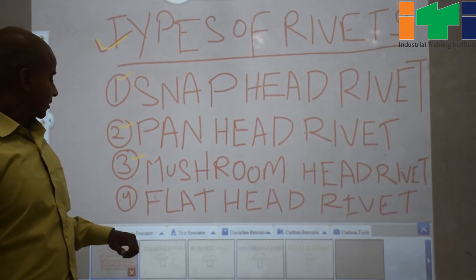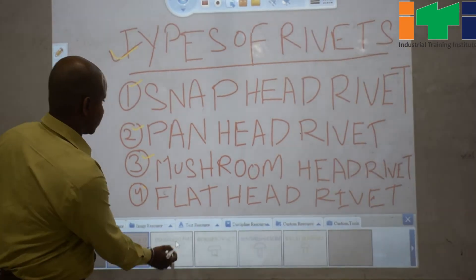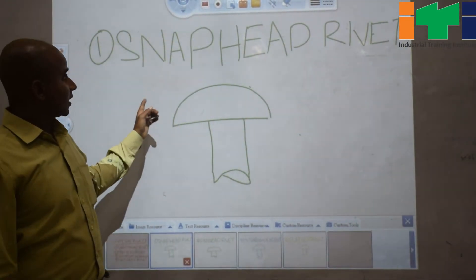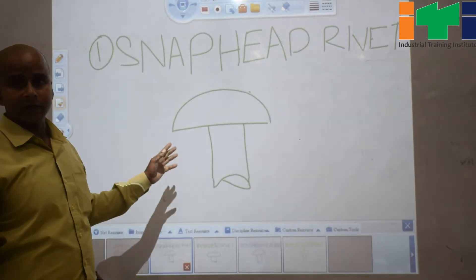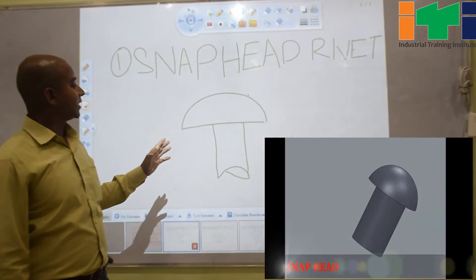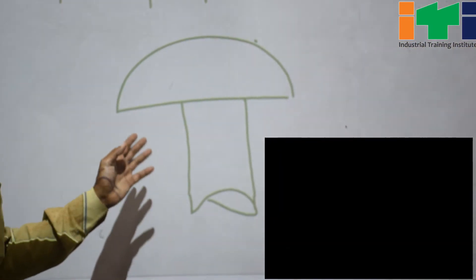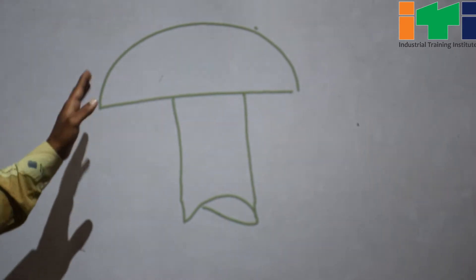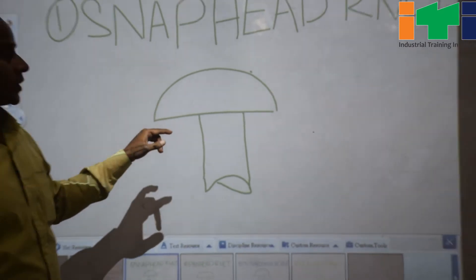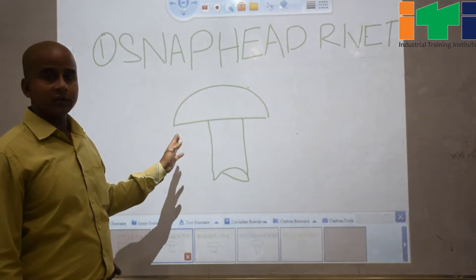First, we go to snap head rivet. This one is called snap head rivet. This rivet is designed so that the other end of the rivet is similar to the head of the rivet. It is used in structural work and light fabrication work.